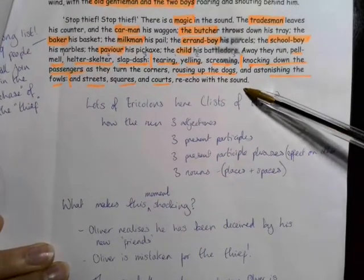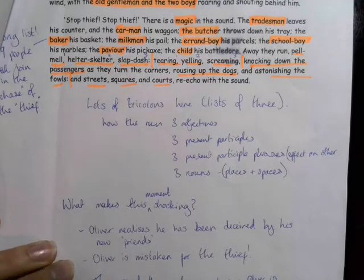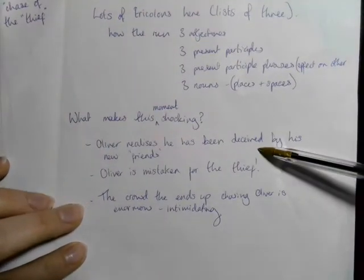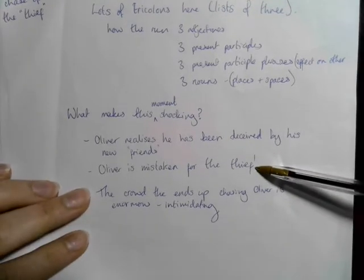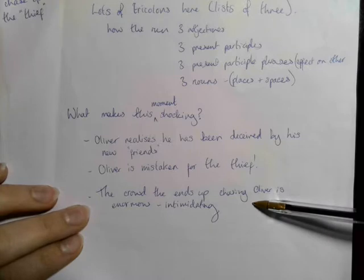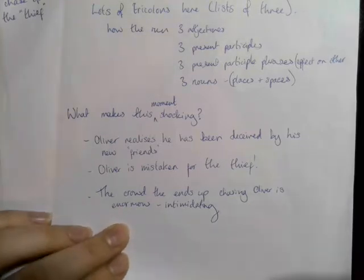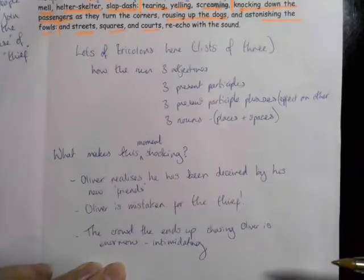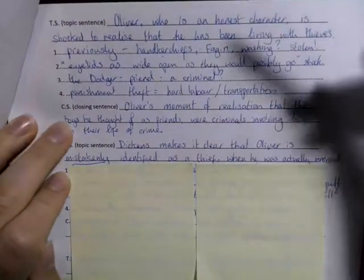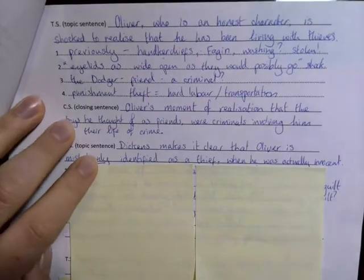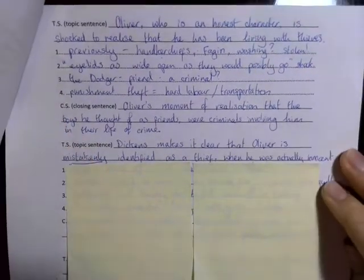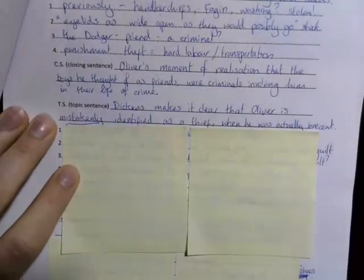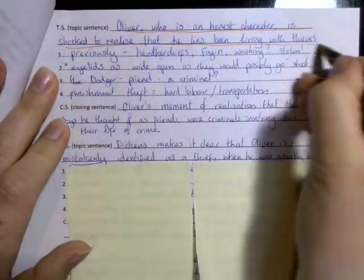So it's certainly quite a shocking turn of events for Oliver. He thought he was just going on a harmless jaunt. What makes this shocking? Well, Oliver realizes that he's been deceived by his new friends. Oliver is mistaken for the thief, and the crowd ends up enormous and intimidating. So we've read the text, I've slightly skipped you forward to help you find some conclusions. You will find a resource that looks like this.